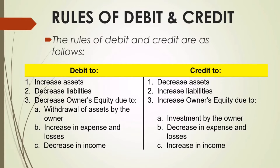Let us now proceed to the rules of debit and credit. You are going to debit if: number one, you are going to increase assets; number two, if you are going to decrease liabilities; and if there is a decrease in owner's equity due to the following: letter A, withdrawal of assets by the owner; letter B, increase in expenses and losses; and letter C, if there is a decrease in income.